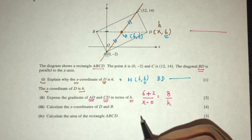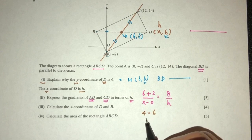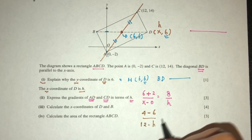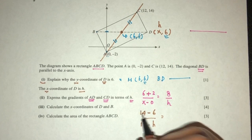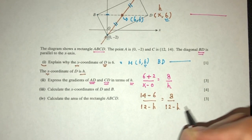Now CD, same thing. y2 minus y1. So 14 minus 6 over 12 minus h. That should be 14 here minus 6 should be the value of 8 over 12 minus h.